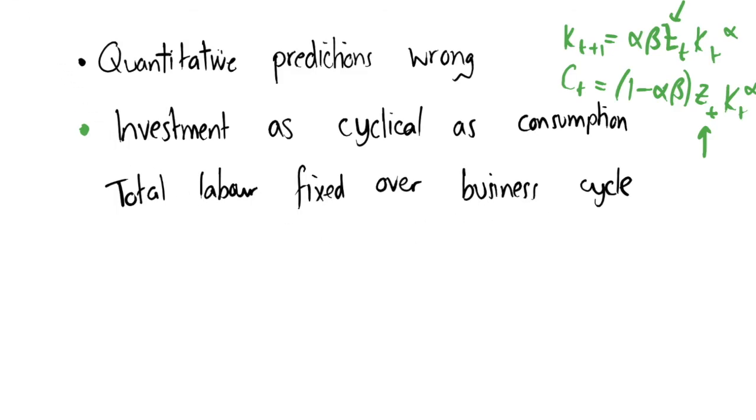Whereas in reality, the data does not show this. We have that investment is a lot more volatile than consumption. We have things like consumption smoothing, that individuals smooth their consumption over the business cycle, whereas when it comes to investment, firms will invest heavily when we're looking at good future productivity expectations, and they will cut down investment a lot in recession. So this prediction is not very good in the RBC model.